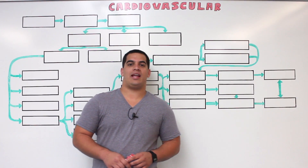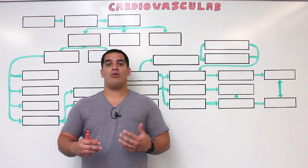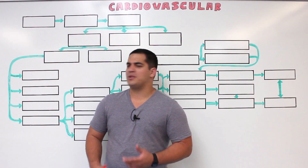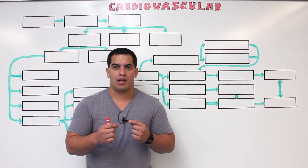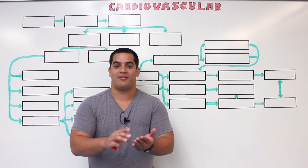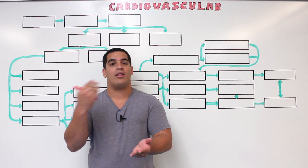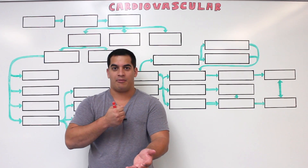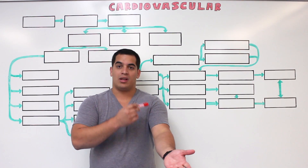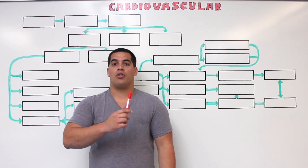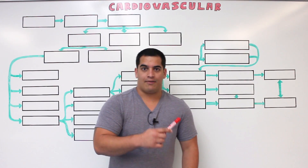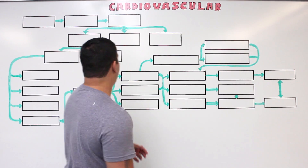Hi Ninja Nerds, in this video we're going to talk about the actual blood flow through the upper limb, which is going to be the arm. The whole purpose of this is to follow a drop of blood from the left ventricle all the way down to the fingers, and then in another video we'll talk about how we bring that blood back up. So let's go ahead and get started.